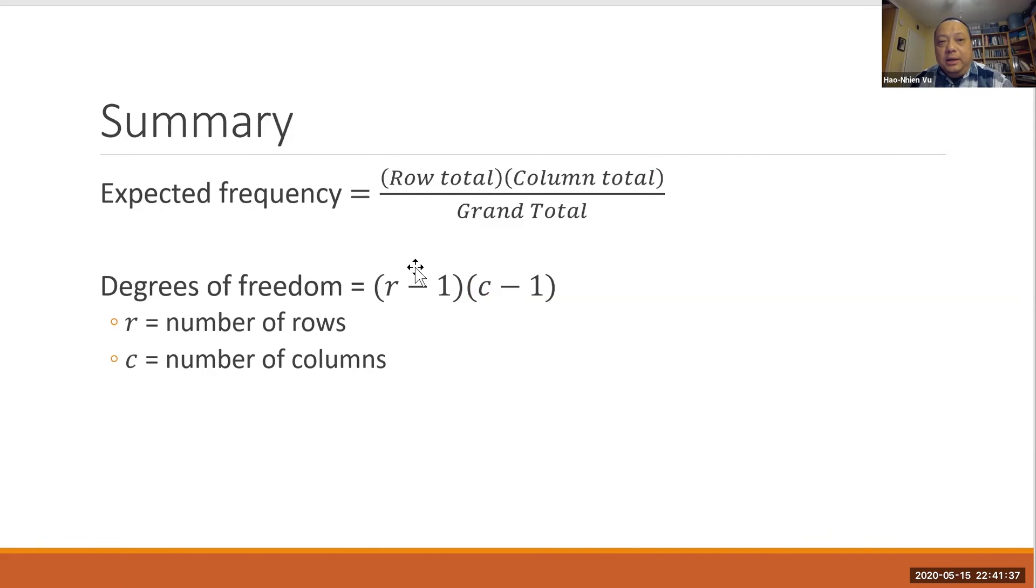In summary, in a contingency table problem, the expected frequency in each cell is equal to row total times column total divided by grand total. And the degrees of freedom is equal to r minus one times c minus one, where r is the number of rows and c is the number of columns.